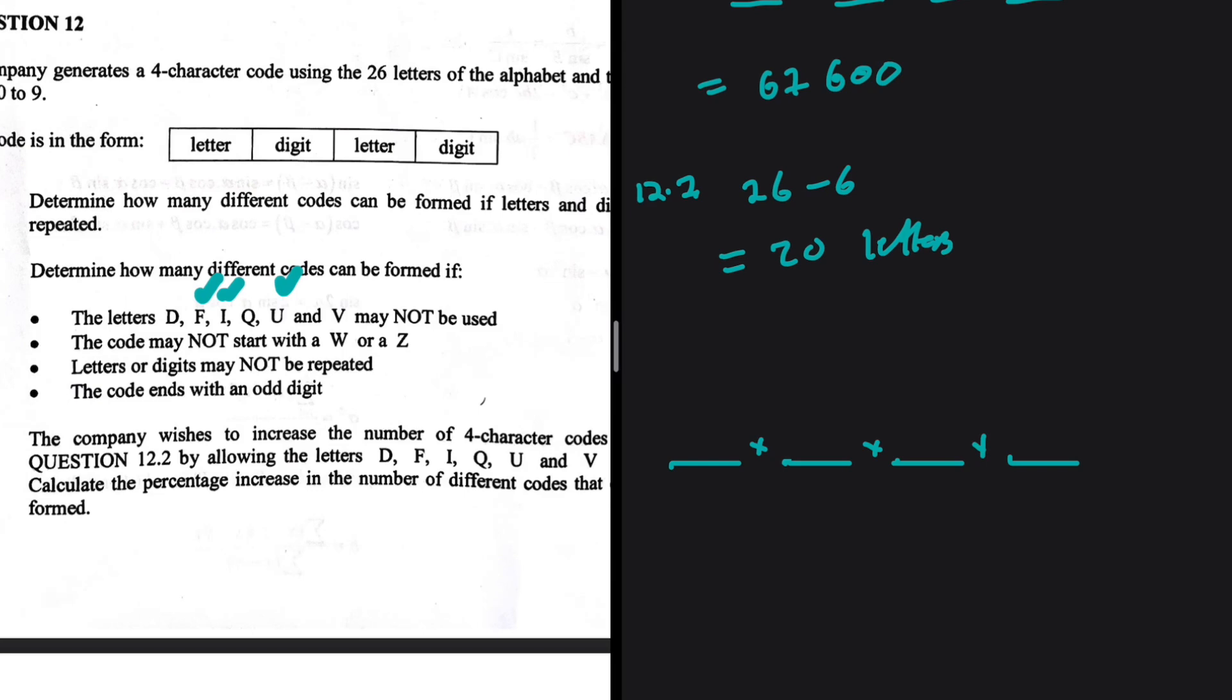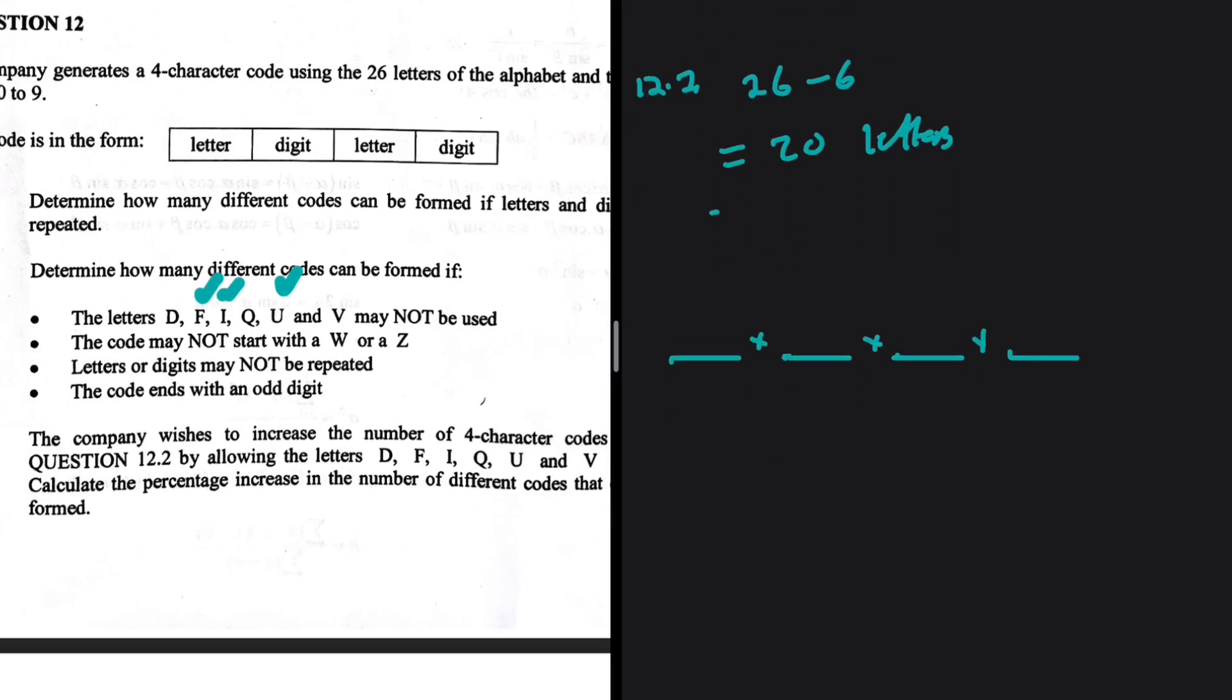The code ends with an odd digit, so how many odd digits do we have? The digits we have are 0, 1, 2, 3, 4, 5, 6, 7, 8, 9. The odd ones are 1, 3, 5, 7, 9—that's five odd digits. So we have a possible five digits that can fill the last spot.